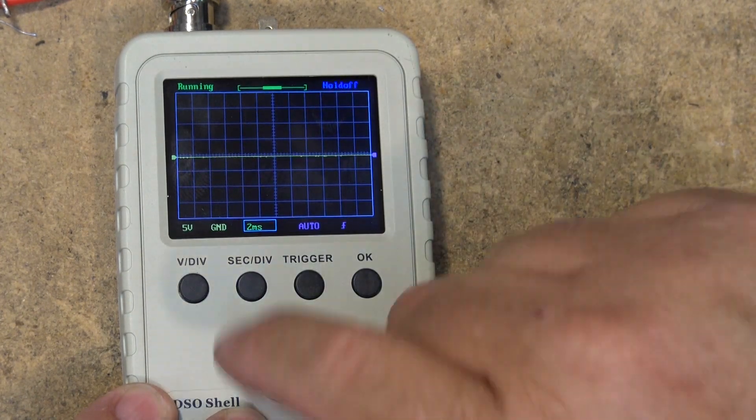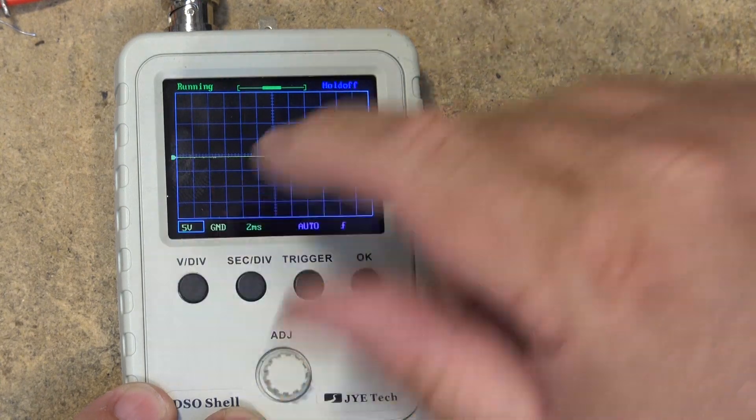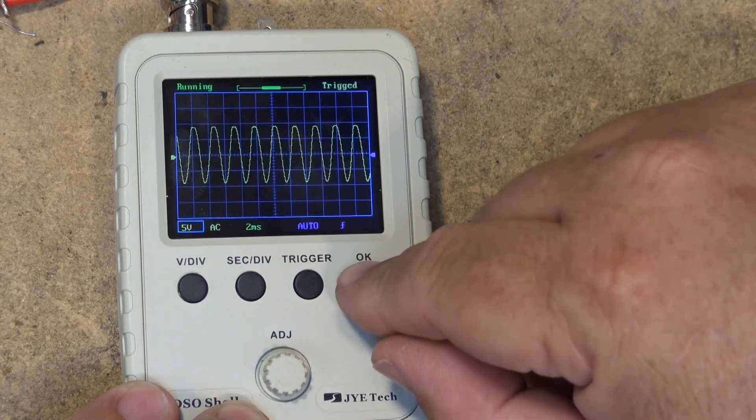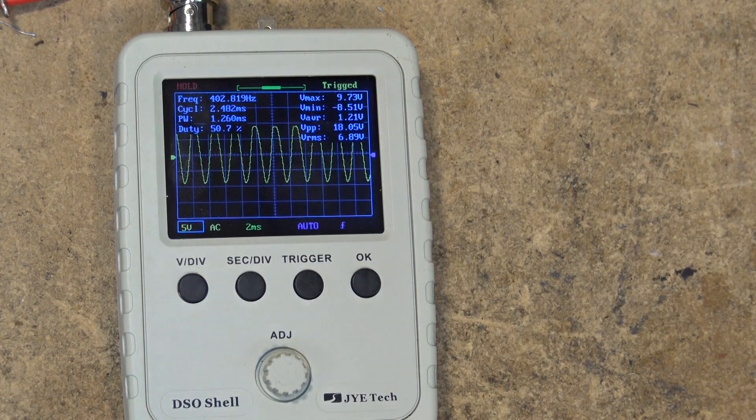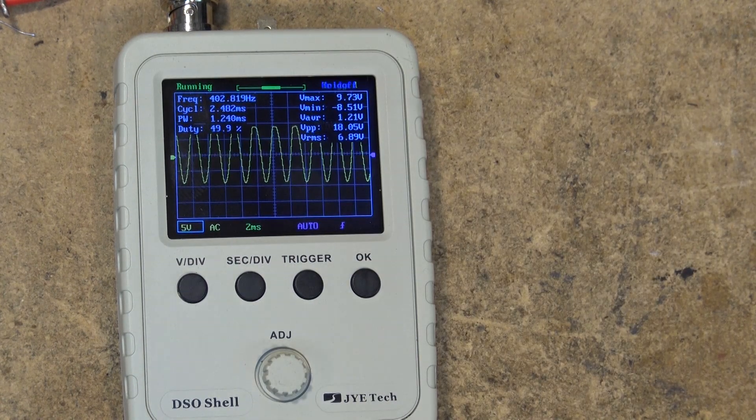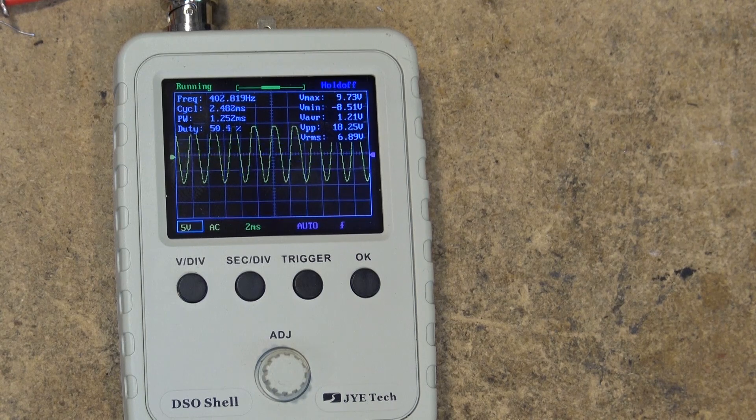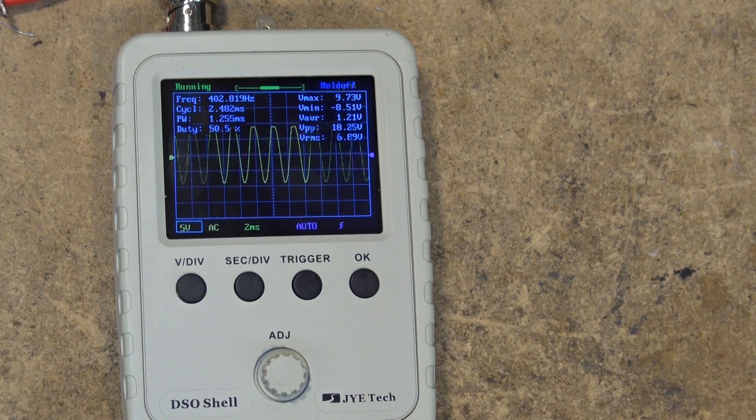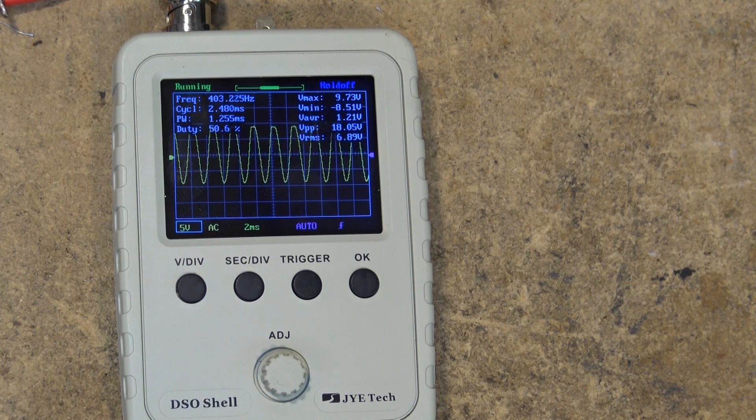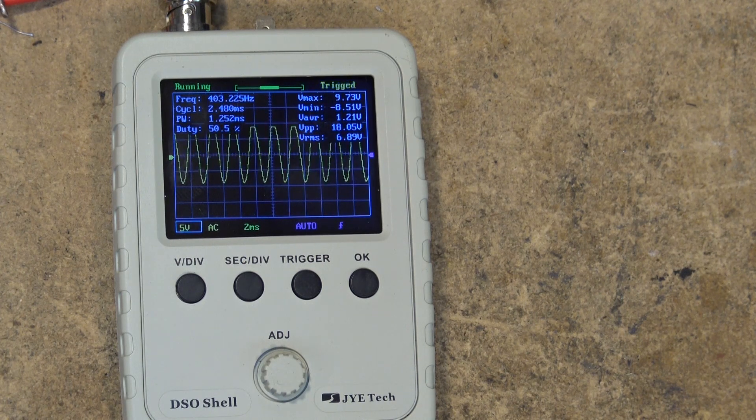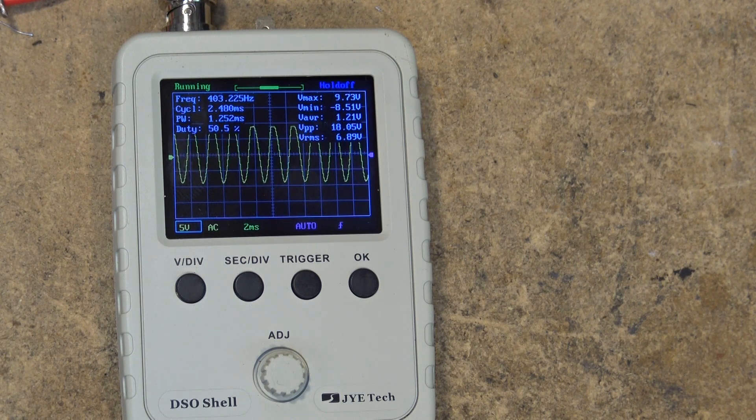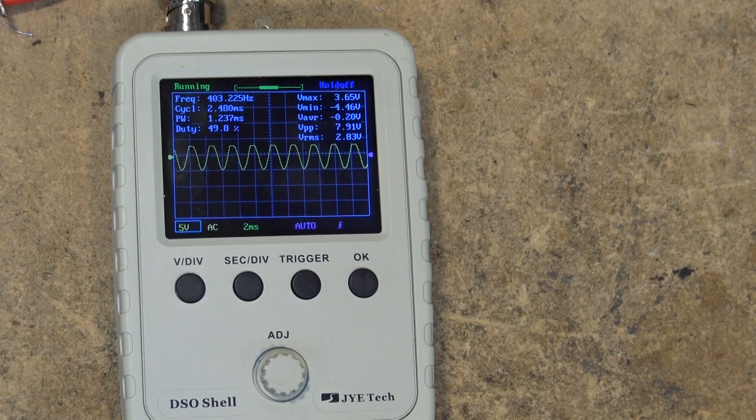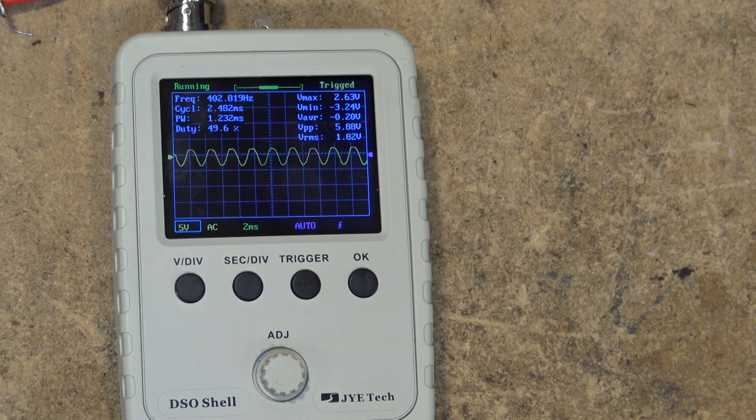If I press and hold the OK key for about three seconds, this will turn on the measurements. It's showing me the frequency coming in is 403 Hertz - it'll count it. It's a 50-50 duty cycle. Here's my V max 9.73 volts and minus 8.51 volts, so it's got all my measurements including VRMS, peak to peak voltage. This can be used as a measurement tool as well.